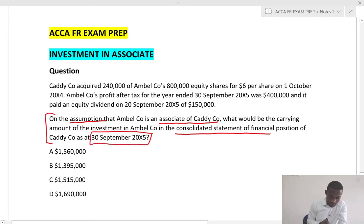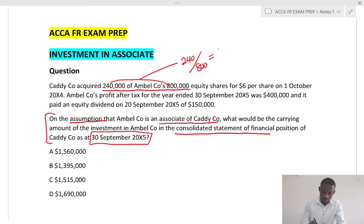Now the details. Caddy Co acquired 240,000 of Amber Co's 800,000 equity shares. Even if you are not given that Amber Co is an associate of Caddy, you could calculate the percentage of interest: 240 over 800, which is 30 percent. You need this percentage for the sharing of the post-acquisition profit or losses.